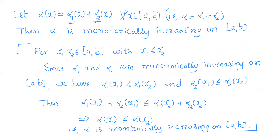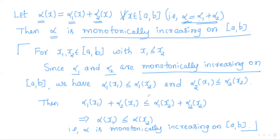Now consider α₁ + α₂ and define α(x) = α₁(x) + α₂(x). Since α₁ and α₂ are monotonically increasing functions on [a, b], we observe that α is also monotonically increasing on [a, b]. To verify: a function is monotonically increasing if x₁ ≤ x₂ implies α(x₁) ≤ α(x₂), meaning as domain points increase, the function values should correspondingly increase.